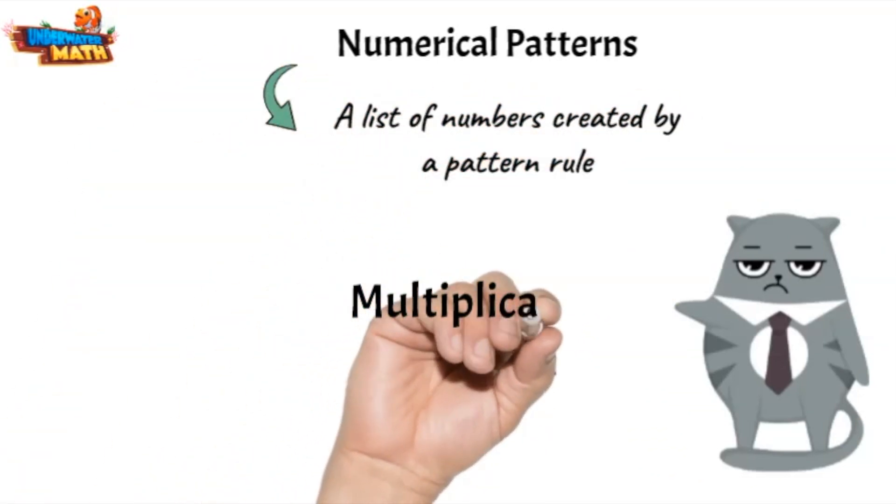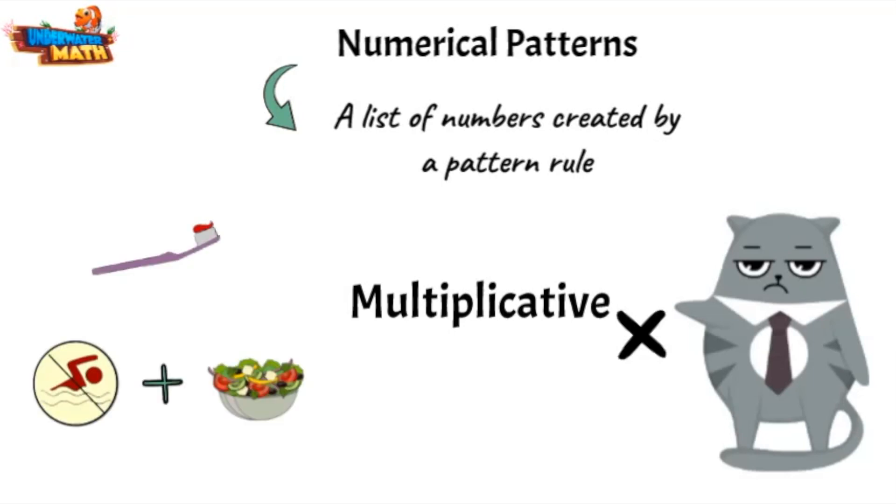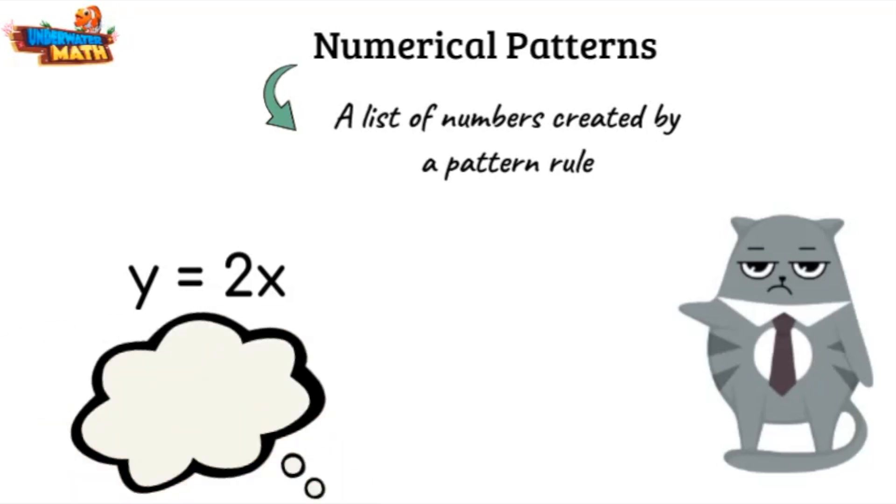A multiplicative pattern just means we are multiplying rules. I'm not a fan of those. Do you mean like brushing your teeth or not swimming after reading? Not quite grumpy kitty. Pattern rules are equations that relate to variables like x and y. It tells us what to do to x to get our y, and this creates our table of numbers.